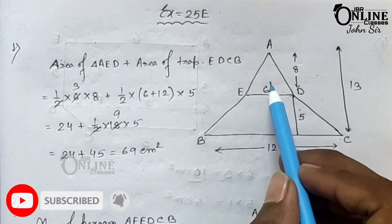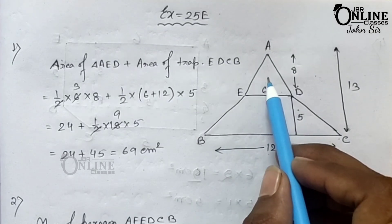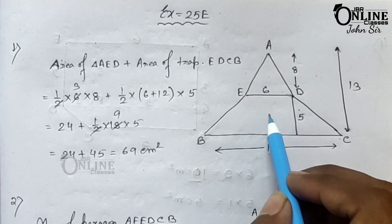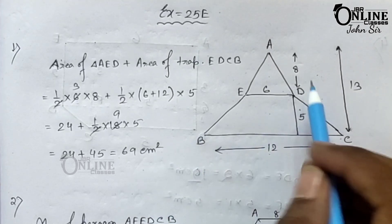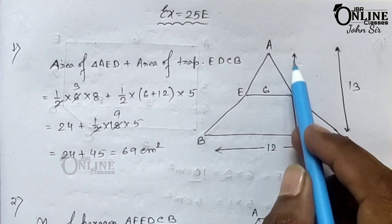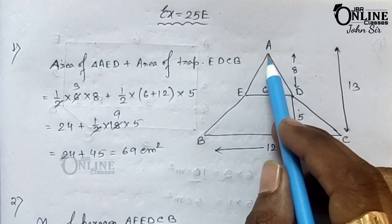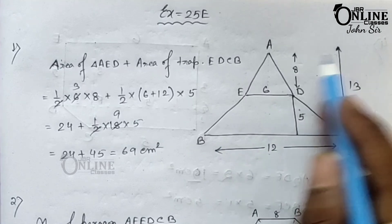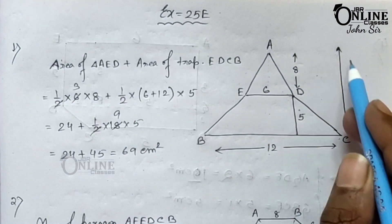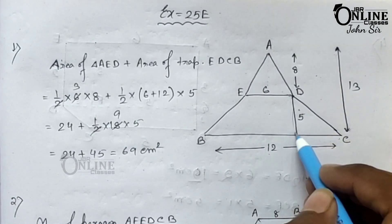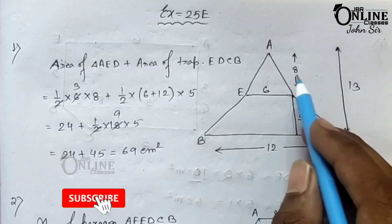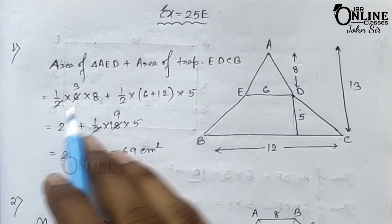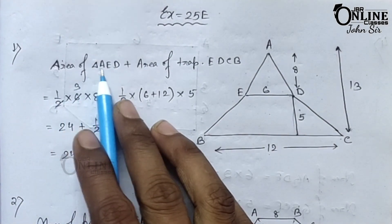First find the area of the triangle, then find the area of the trapezium. The perpendicular height of the triangle equals 8. The whole height of the polygon equals 13, so the height of the trapezium will be 13 minus 8, which equals 5.